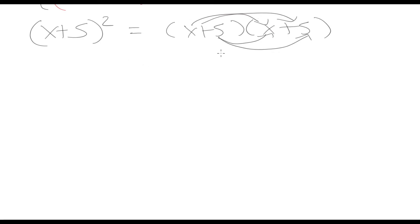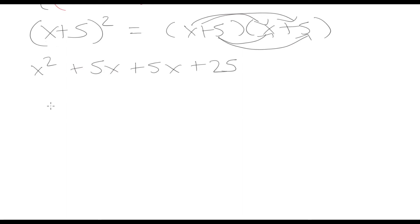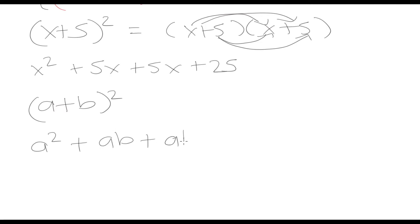Let's do this the long way and see if we can recognize a pattern. x times x is x squared, x times 5 is 5x, x times 5 again is another 5x, and 5 times 5 is 25. Another way of writing this: when we have a plus b squared, the result is a squared plus ab plus ab plus b squared — which is exactly what we have here since our a is x and our b is 5.